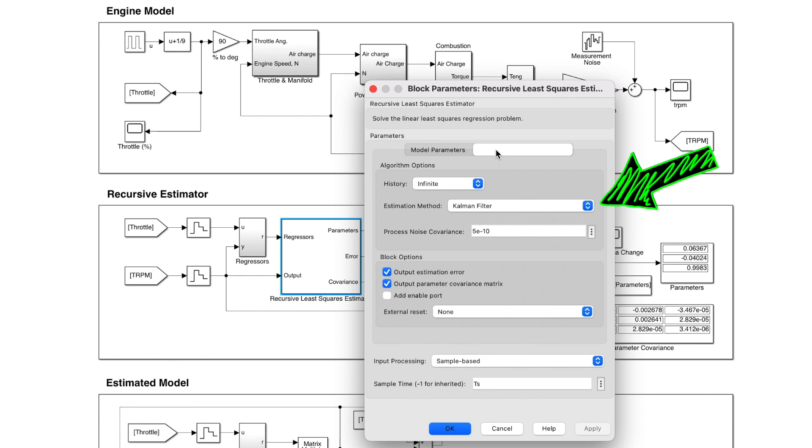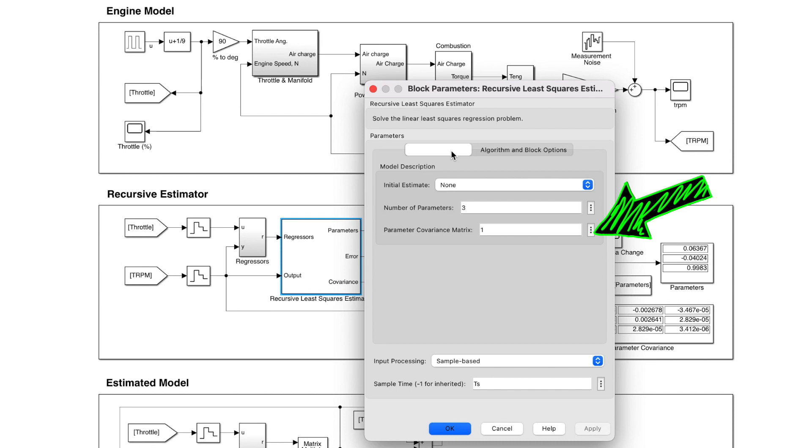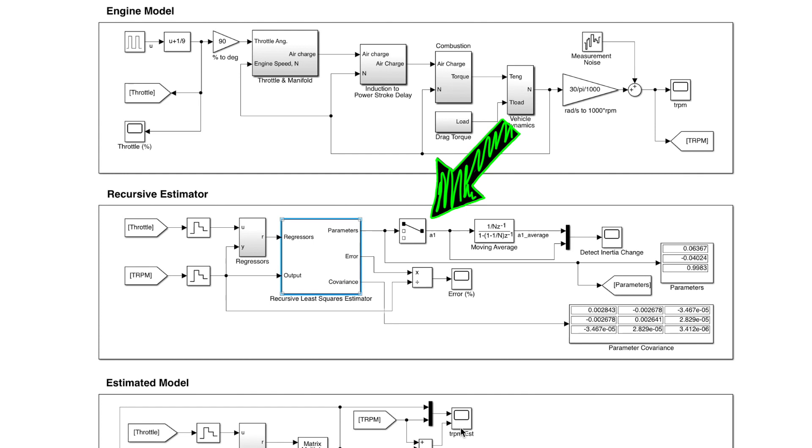Inside this block, you can see that I'm using the Kalman filter to estimate the model parameters. The process noise covariance and the parameter covariance matrix are both specified. Now, this model is set up such that the first parameter, A1, is proportional to the motor inertia.